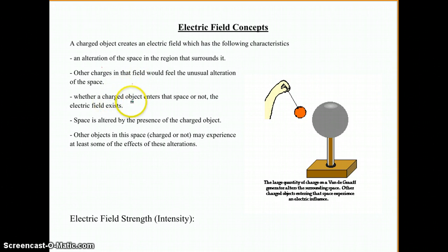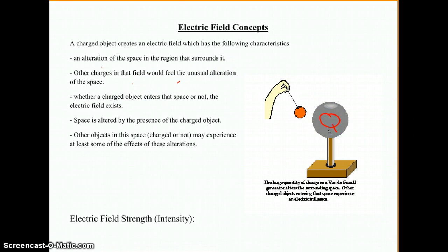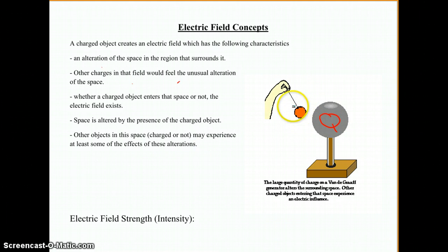Now, whether a charged object enters that space or not, that electric field exists. The charge on this Van de Graaff — we call that capital Q — is what's going to actually create the field, not whether there's anything else in the space. We have in the picture an object in the space, but whether or not that object were there, whether the hand were there, whether the ball were there, the charge would still create its own electric field.